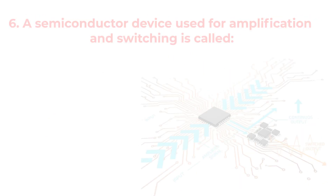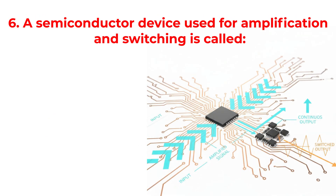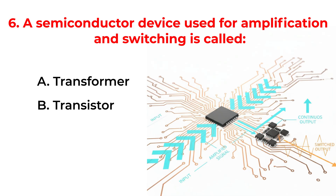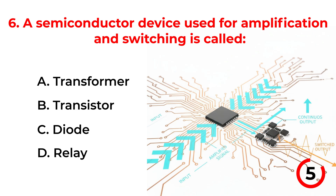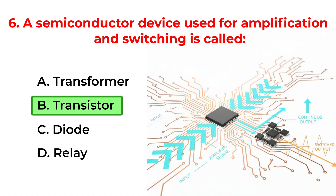A semiconductor device used for amplification and switching is called: A. Transformer. B. Transistor. C. Diode. D. Relay. Correct answer is option B. Transistor.